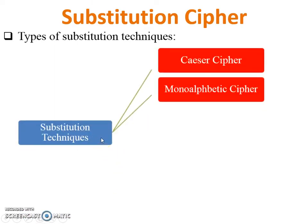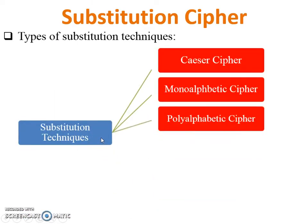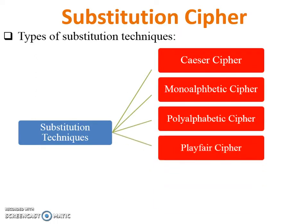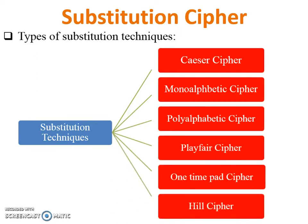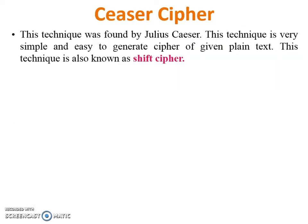There are several types of substitution techniques: Caesar cipher, monoalphabetic cipher, polyalphabetic cipher, Playfair cipher, one-time pad cipher, and Hill cipher. Today I am going to teach you Caesar cipher.